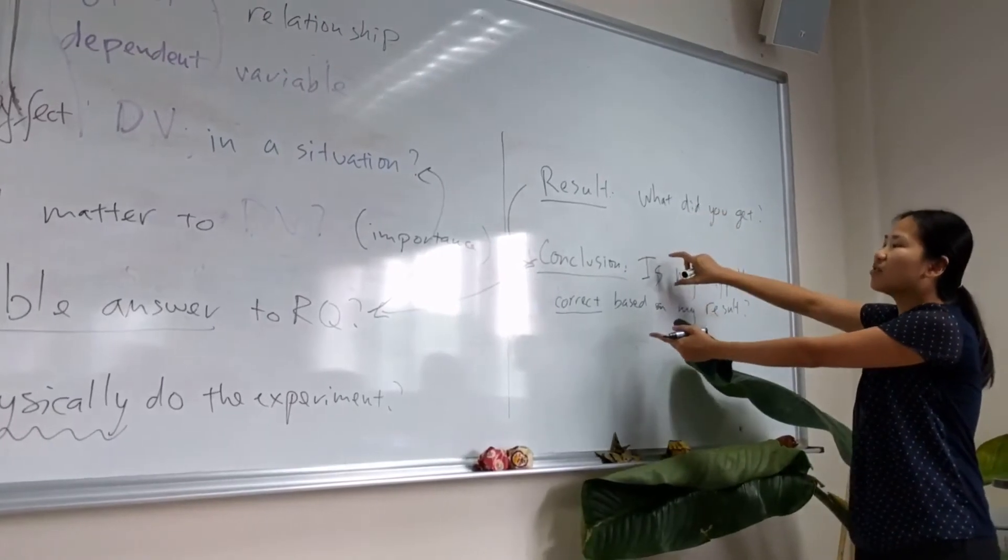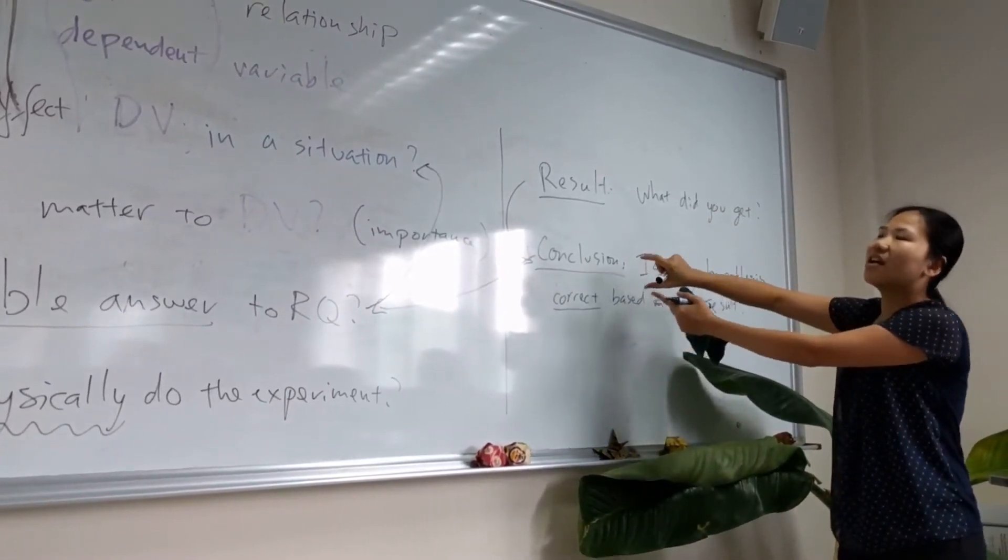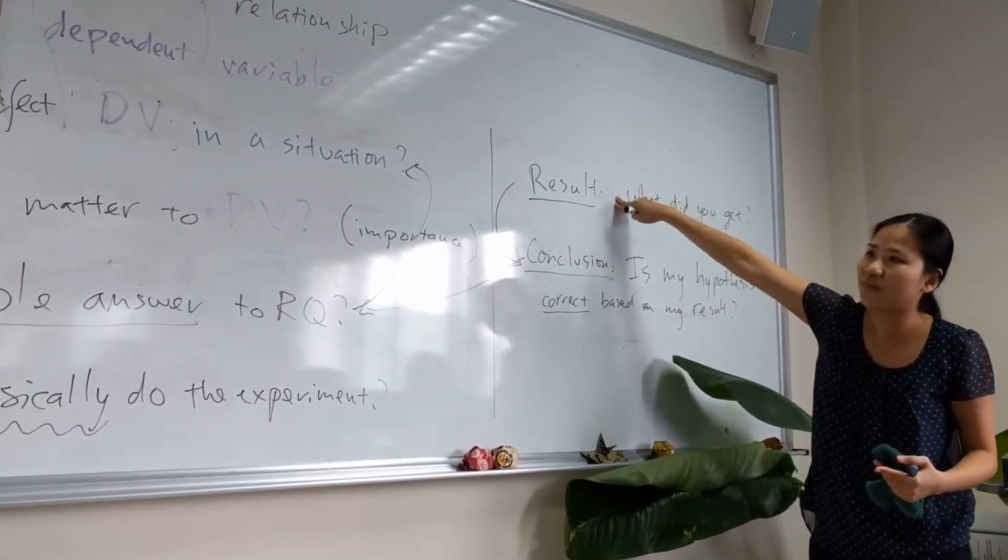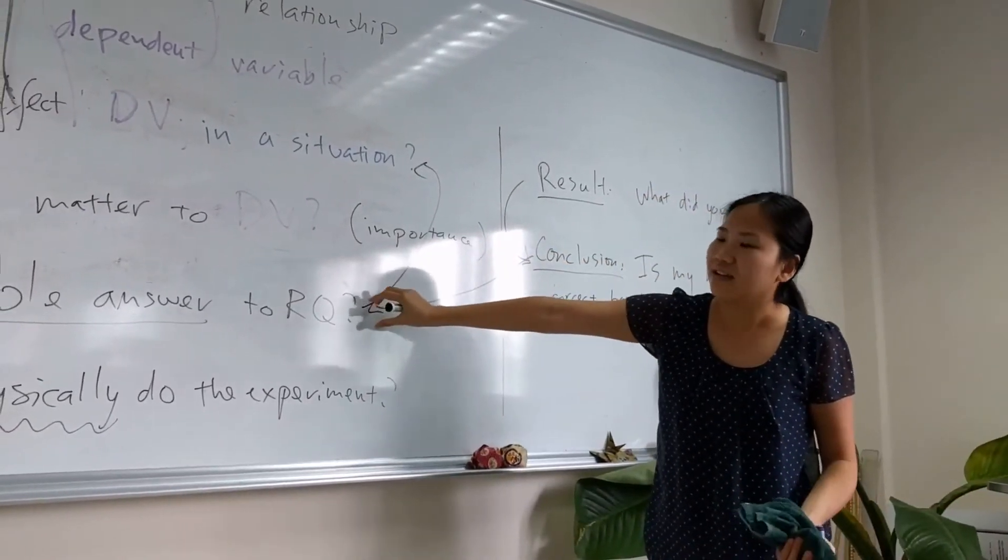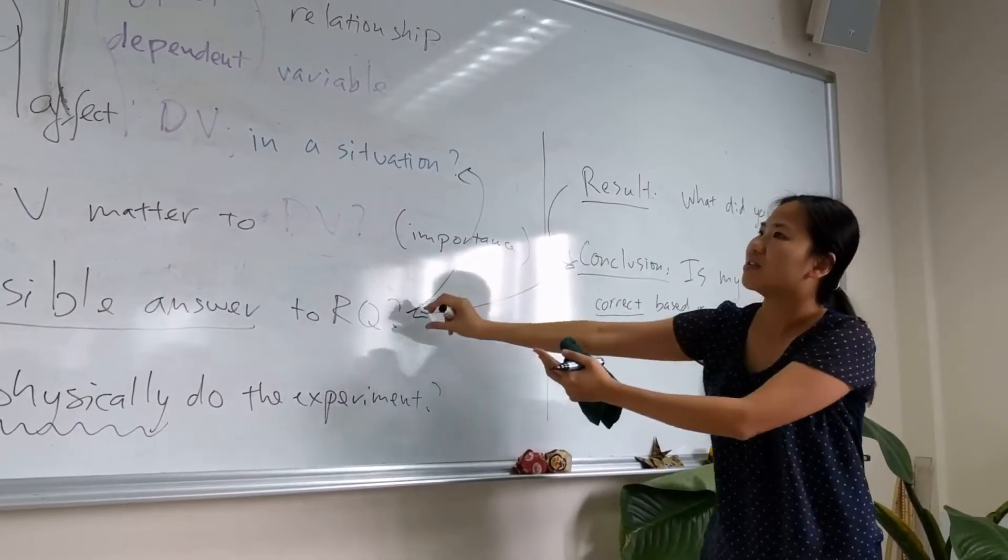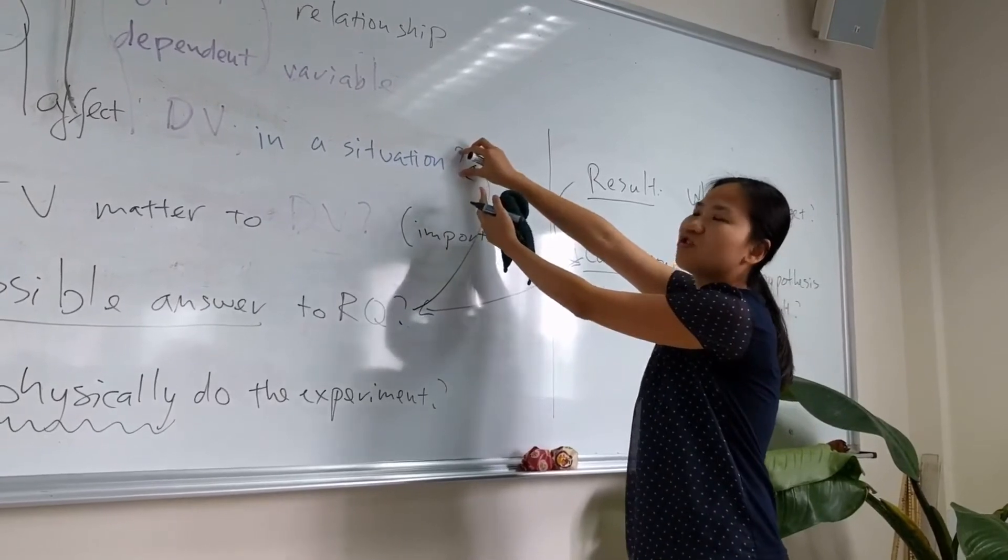Now if my hypothesis is not supported, not correct by, not supported by the result, then you can go back to say yeah, hypothesis is not according to the result. So maybe the research question should be answered differently.